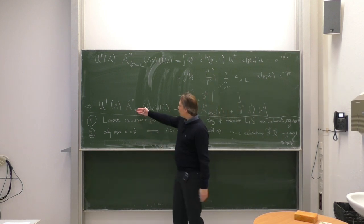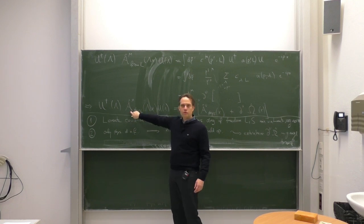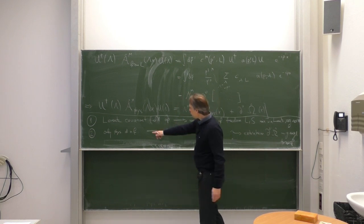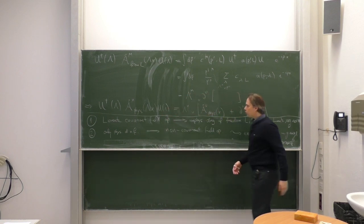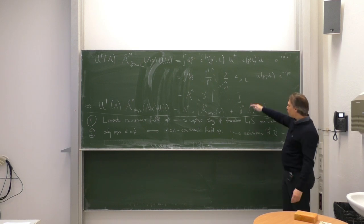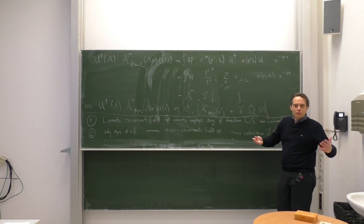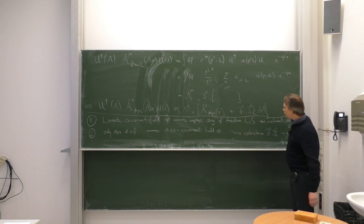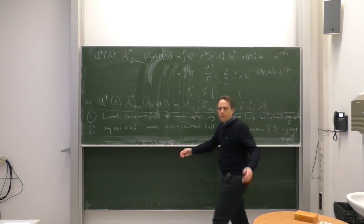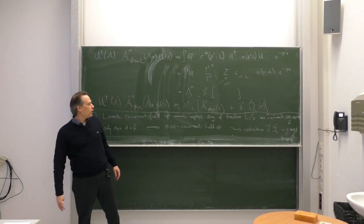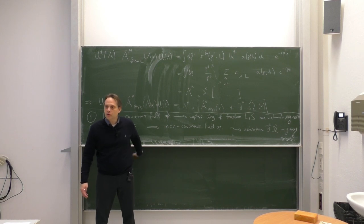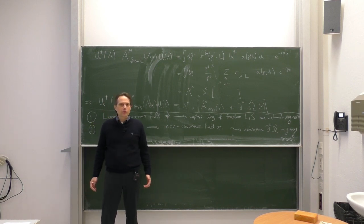The other side of the same problem is if we remove the unphysical degrees of freedom and define only a physical field operator which contains only the physical lambda 1 and 2 degrees of freedom, then the Lorentz transformation of that operator is not covariant — we violate Lorentz covariance because we get this additional term. Interestingly, the additional term looks like a gauge transformation, which already tells you that maybe gauge invariance is actually necessary for Lorentz invariance. These are the two sides of the same problem: Lorentz invariance and quantum mechanical properties like positive norm states and only physical degrees of freedom are difficult to reconcile for massless spin-1 particles.